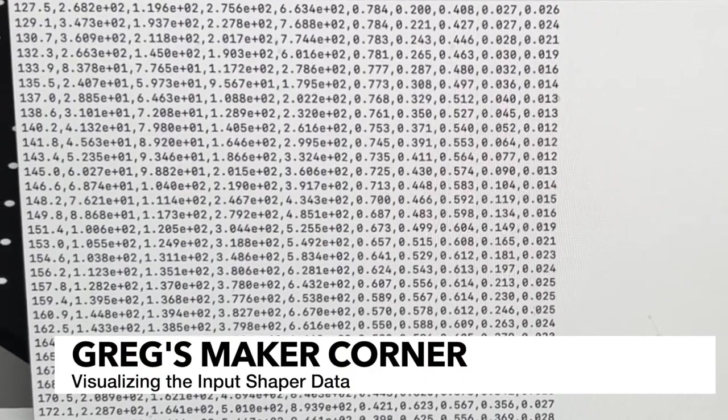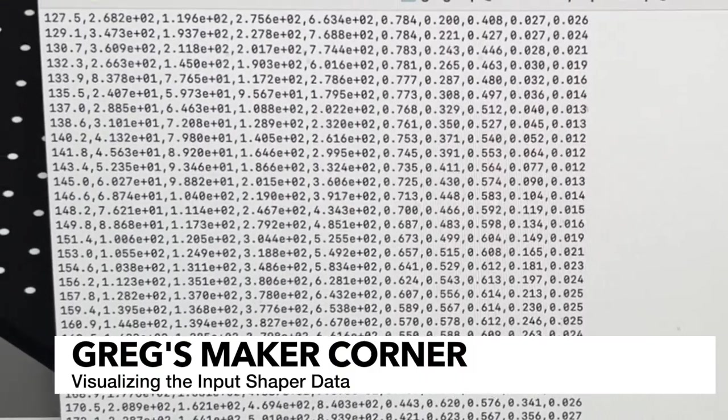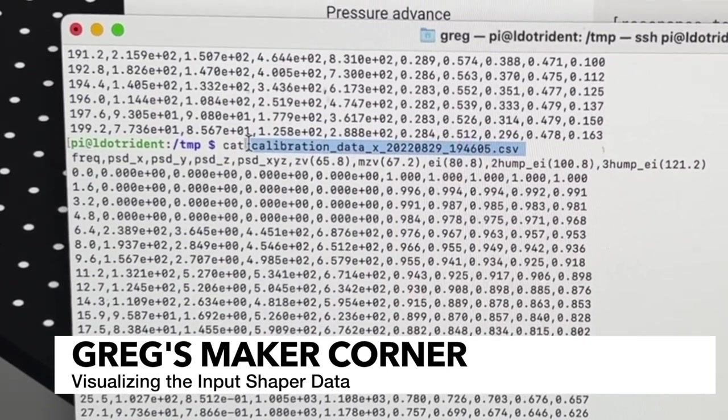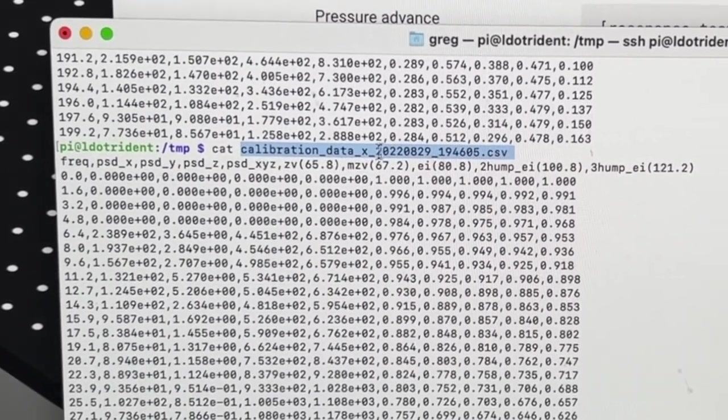You can actually see the raw data that was dumped to a CSV file just by checking the contents of the files. In this case the file was named calibration data X. There's also one for Y.